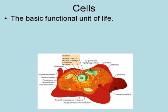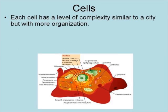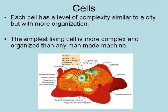Despite the fact that the cell is the basic functional unit of life, it is still a complex, organized system of information, structure, molecular machines, and much more. Each cell has a level of complexity similar to that of a city, but with more organization. In fact, the simplest living cell is more complex and organized than any man-made machine.